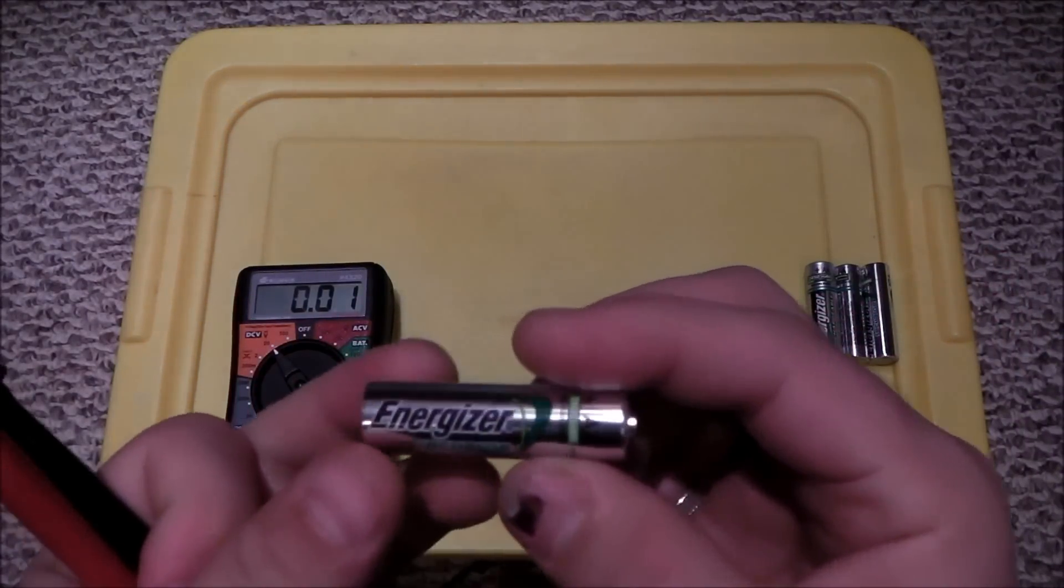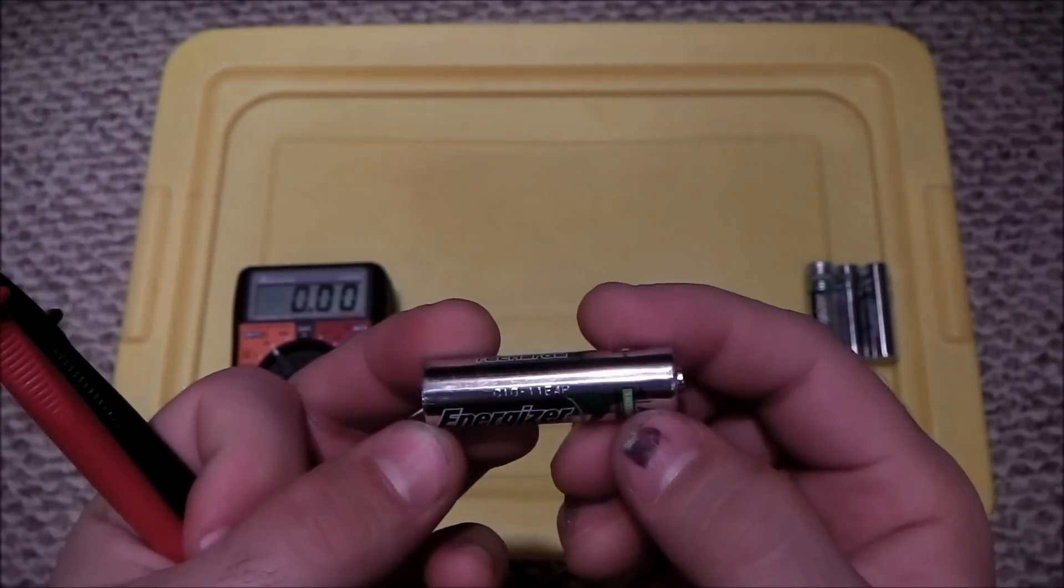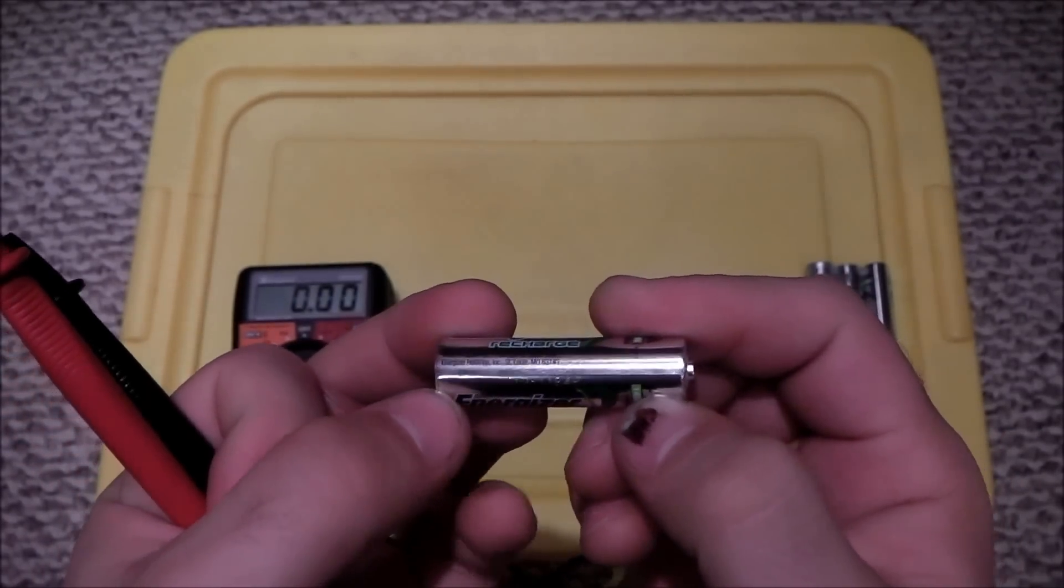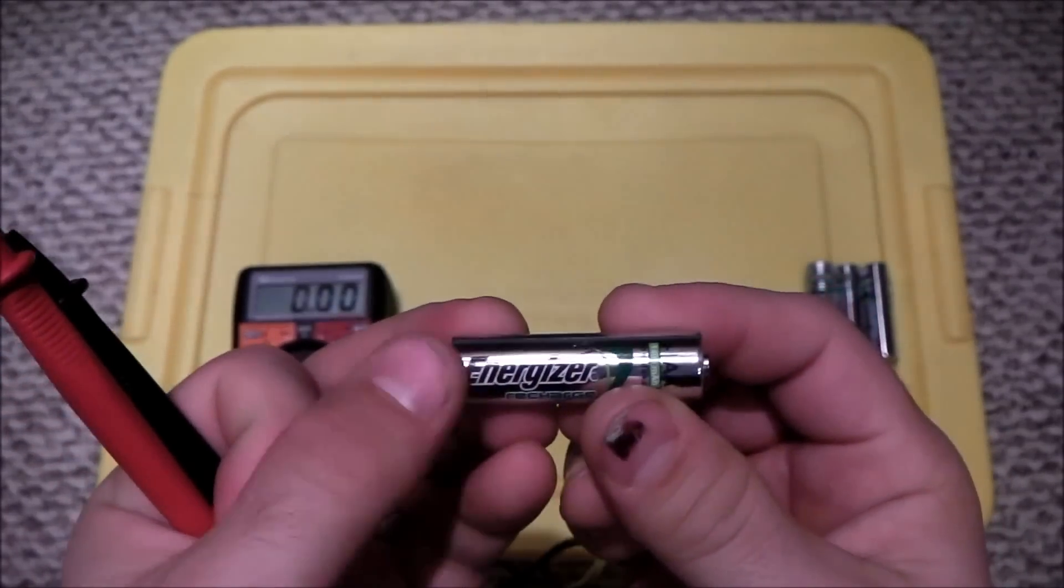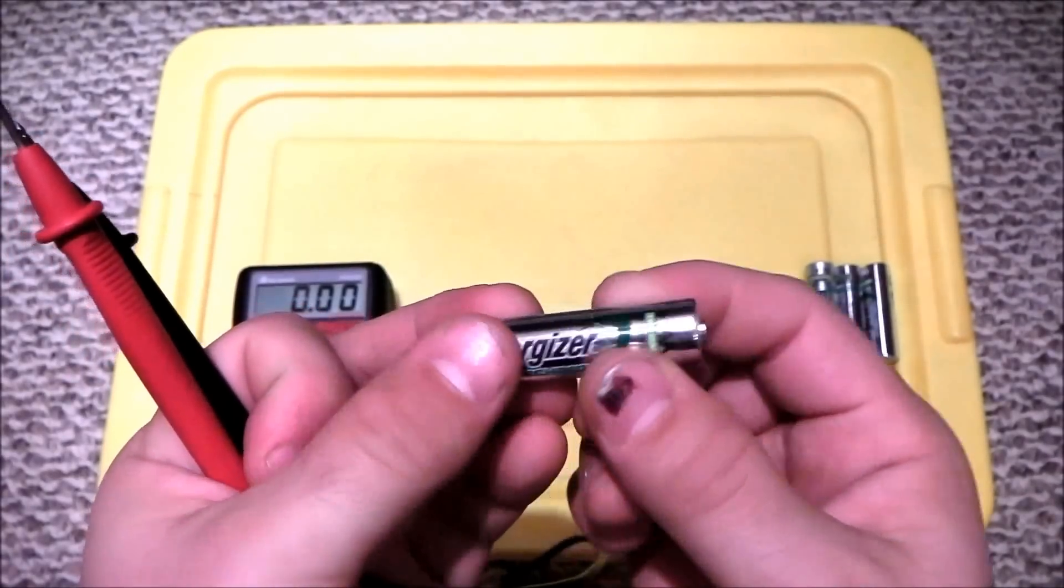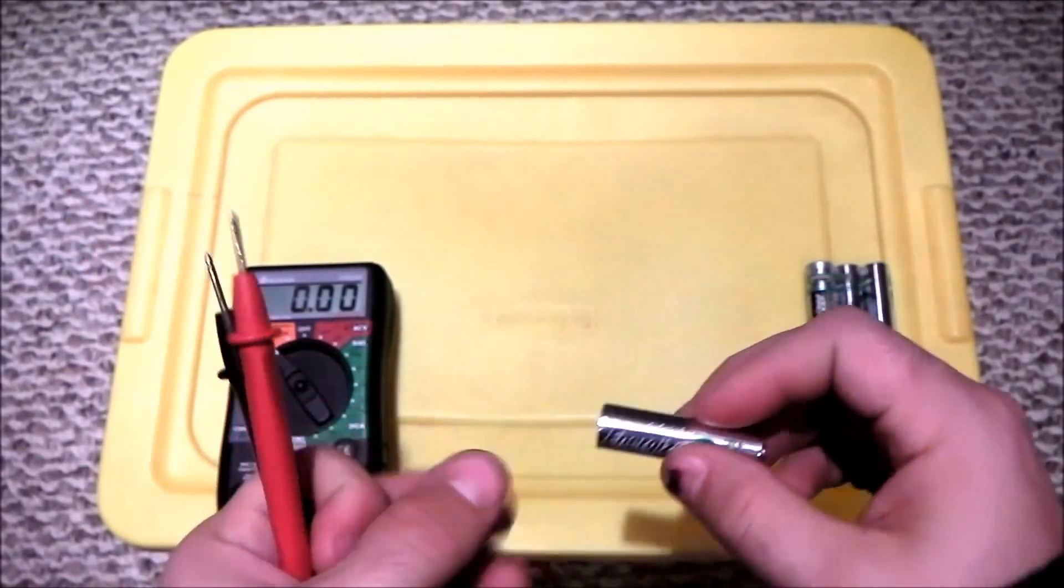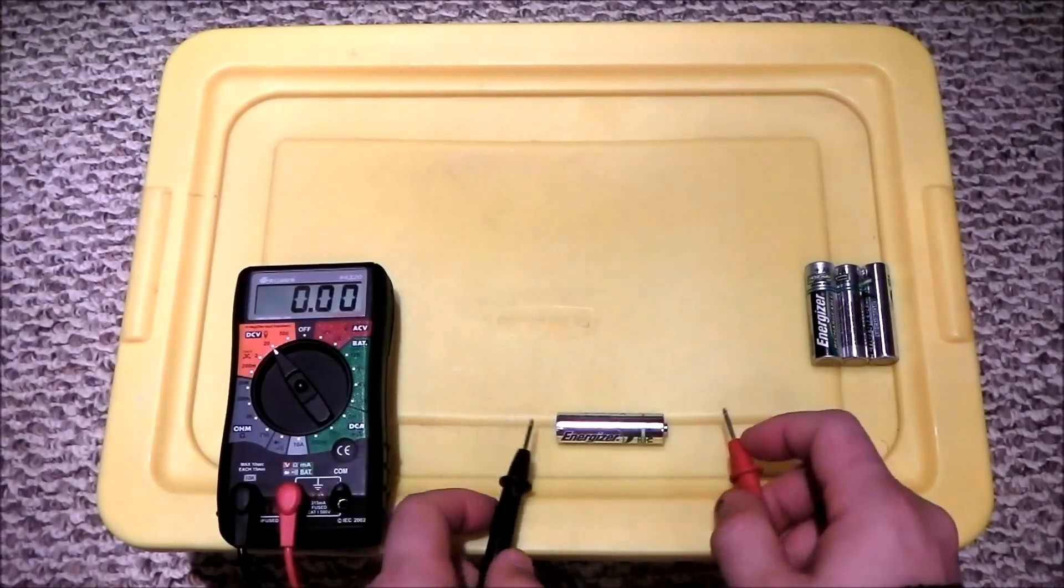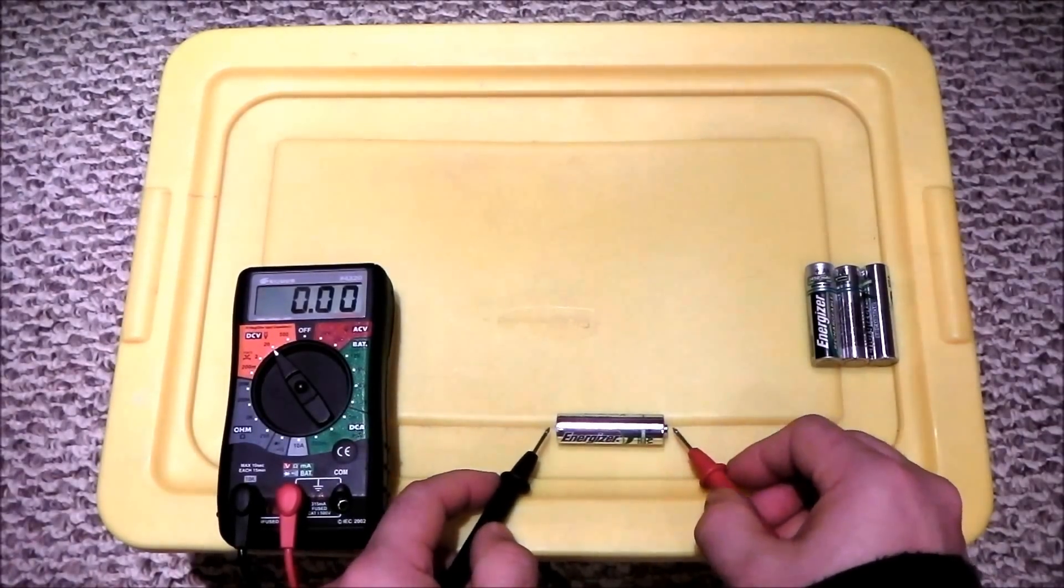So what you want to do is you got a battery. It's going to show one side is positive, other side is negative. If you can't find the positive or negative, the flat side is always negative. The side with the little nub is always positive.